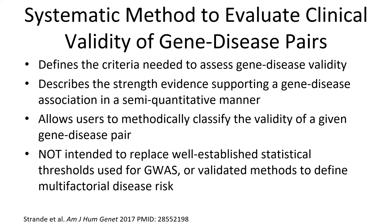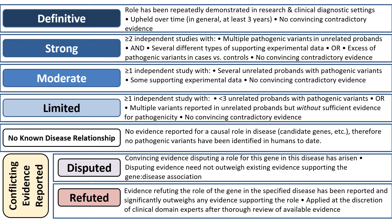The original framework was described in a 2017 publication in the American Journal of Human Genetics (PMID 2855-2198) and in a detailed standard operating procedures document, which is updated periodically and available on our website. An overview of the ClinGen gene disease validity classification is provided in a separate video. These are published in the 2017 article in the American Journal of Human Genetics and are also available on our website.